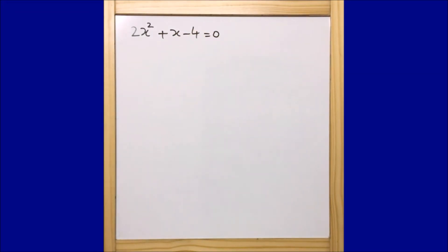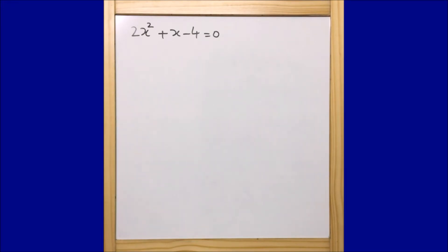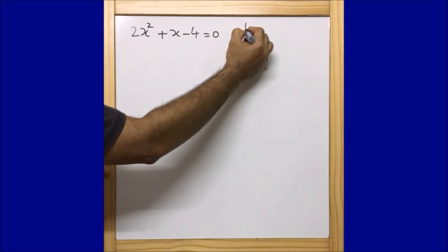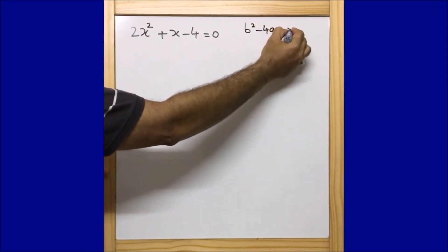Now two things are there. One, we are going to solve this using the completing the square method as the question specifically asks. Second, and most importantly, the question says 'if they exist' — for each and every quadratic equation we do, we should check that the real roots exist. If b² - 4ac is always greater than or equal to 0, the roots exist.